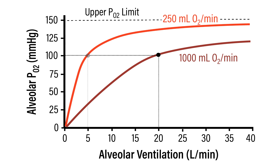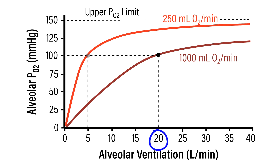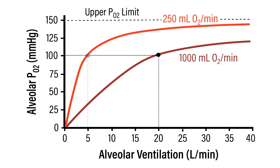So in this scenario, with that increased rate of oxygen consumption, how do we get back to an alveolar PO2 of 100 millimeters of mercury? Obviously, this can be accomplished by increasing the rate of alveolar ventilation — by increasing respiratory rate and/or tidal volume — so that the alveolar partial pressure of oxygen can be brought back up towards 100 millimeters of mercury. For this scenario, this can be accomplished by increasing alveolar ventilation to 20 liters per minute.